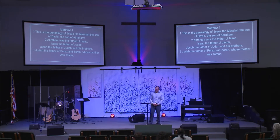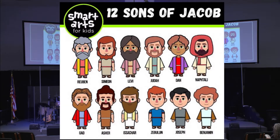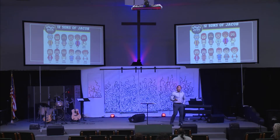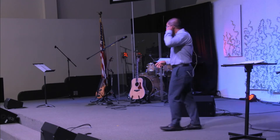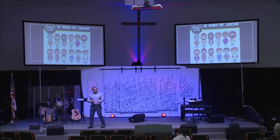Jacob had 12 sons: Reuben, Simeon, Levi, Judah, Dan, Naphtali, Gad, Asher, Issachar, Zebulun, Joseph, and Benjamin. You heard Benjamin over and over again. But what you don't hear a lot about is Judah. Judah is where Jesus — the promised Messiah — was going to come from in that lineage. That's orchestrated by God. But you hear a lot more about Joseph in Genesis rather than Judah. But Tamar — it's in the genealogy of Jesus.